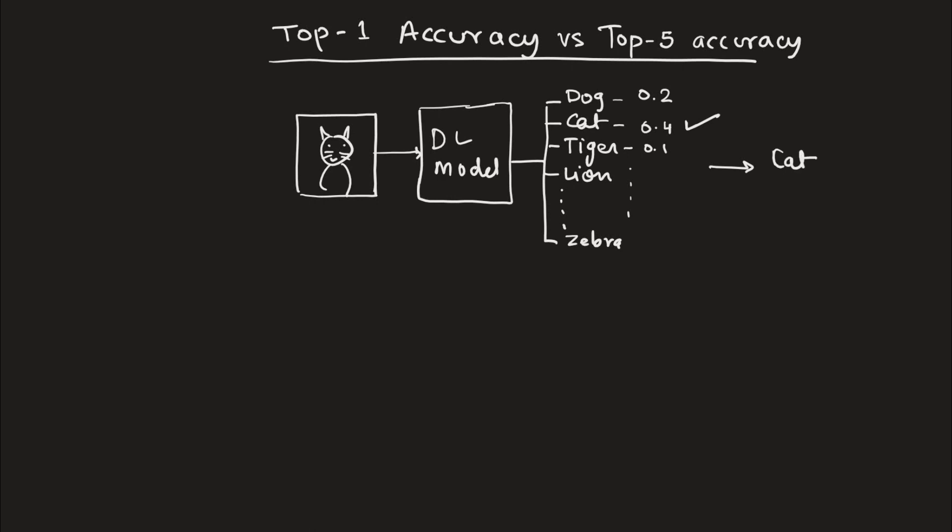So what is top-1 accuracy and top-5 accuracy in this case? Top-1 accuracy is nothing but accuracy itself. So what is the formula for accuracy? Correct predictions by total predictions. So in this case it will be total predictions are for one image and the correctly predicted image is one.